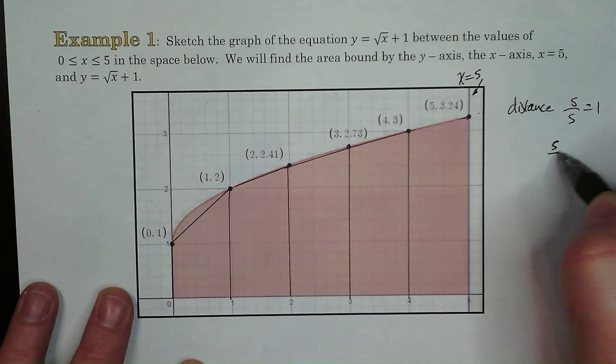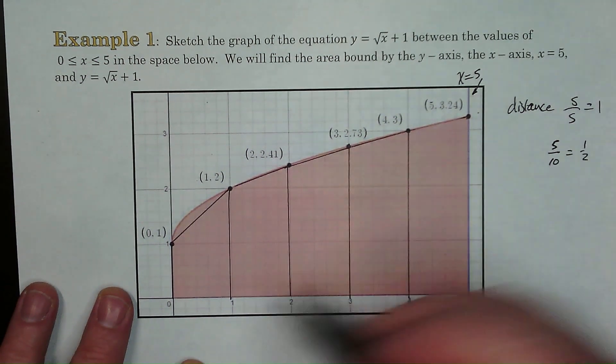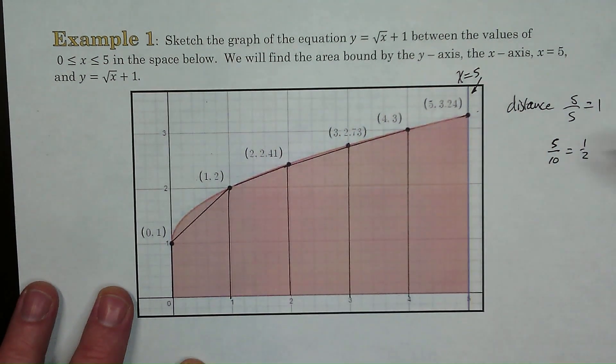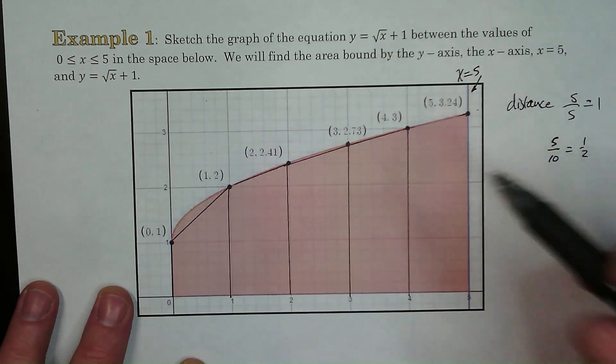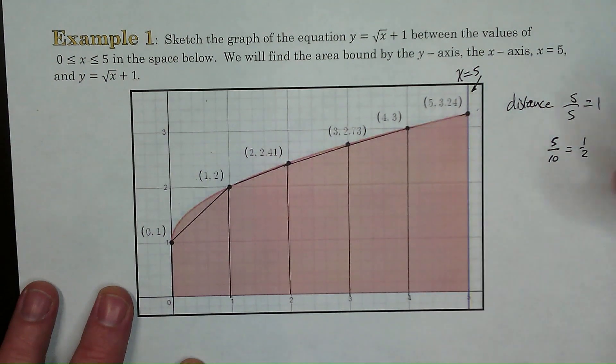But if we wanted to take that distance and cut it up into say ten places then every half we would have one. And the more triangles the closer it is. The more trapezoids the closer the area of the trapezoids will be to the area under the curve. So let's go ahead and take a look at this.